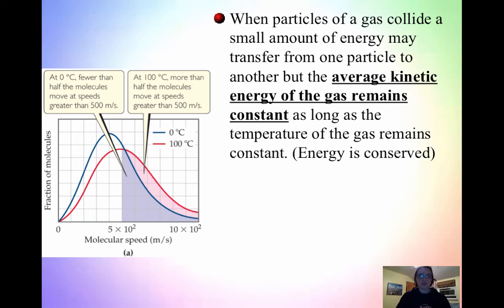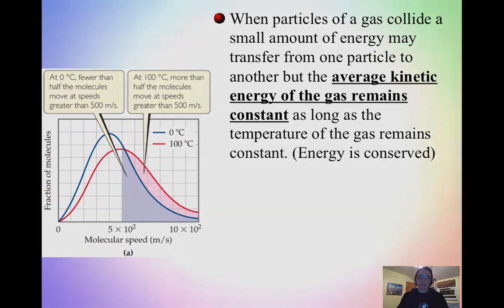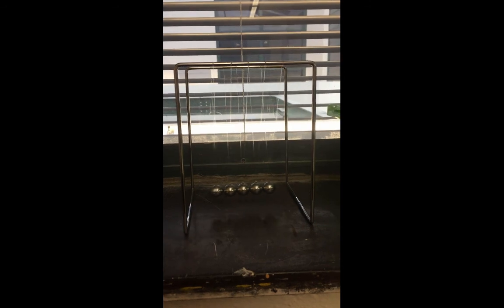The fourth postulate: when particles of a gas collide, a small amount of energy might be transferred, but the average kinetic energy remains constant — energy is conserved among all the collisions. These are called elastic collisions, meaning they collide and immediately bounce off with pretty much the same energy as before. A Newton's cradle is an example of elastic collisions — when you pull one metal sphere back and let it go, assuming no friction, the spheres keep moving because they transfer all their energy into the sphere next to them.